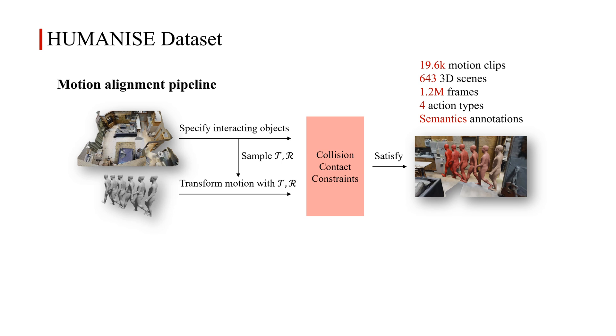Specifically, for an action-specific motion sequence, we first specify an interacting target object in the 3D scene. Then we sample the valid translation and rotation parameters by employing collision and contact constraints to make the interactions physically plausible and visually natural.